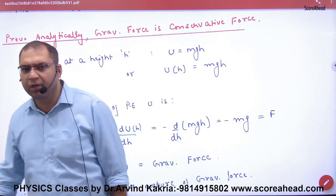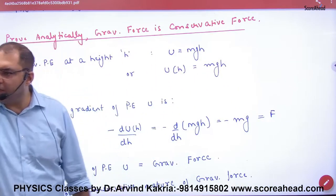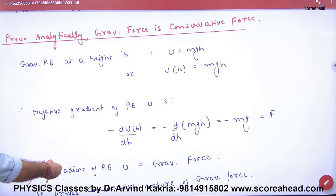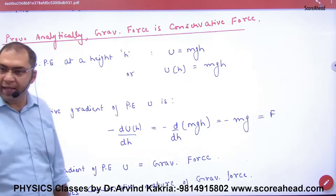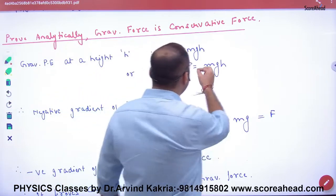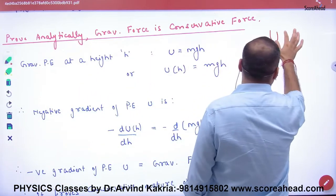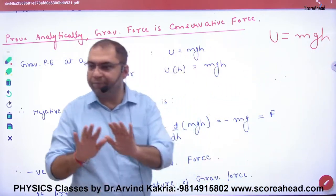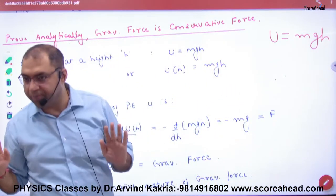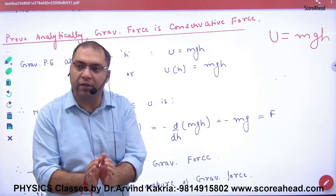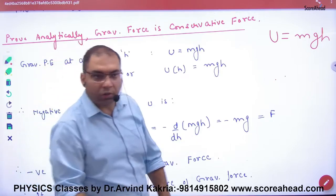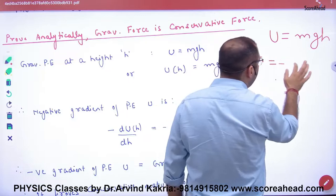If you come to school and do the 4 cases, there is no problem. I will explain it in one line — you don't need to learn anything extra. Simply say that the potential energy of gravity is MGH, and if it is a conservative force, then this formula is valid.